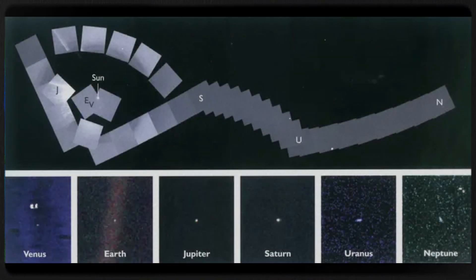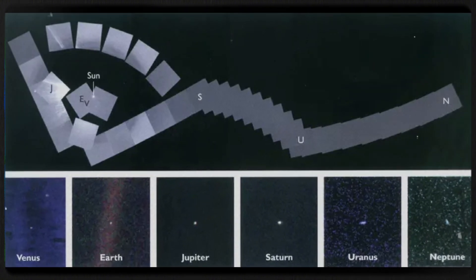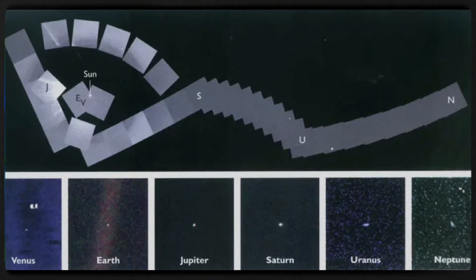In this photo, Earth is barely visible, a tiny speck hidden in the reflected sunlight off the camera's optics, occupying less than a single pixel.